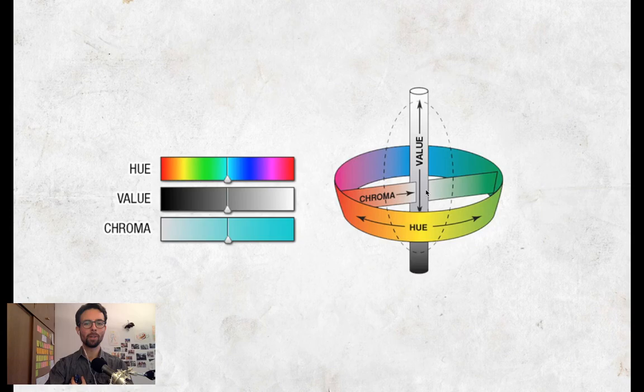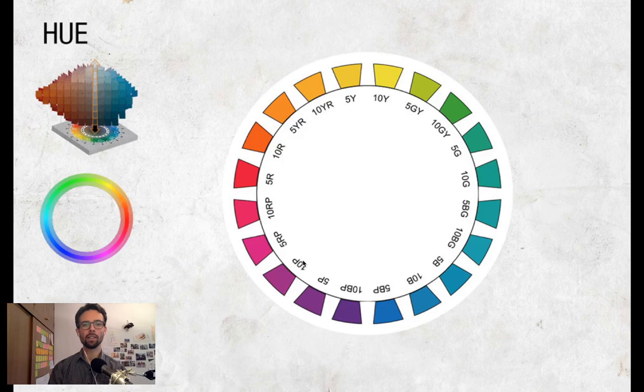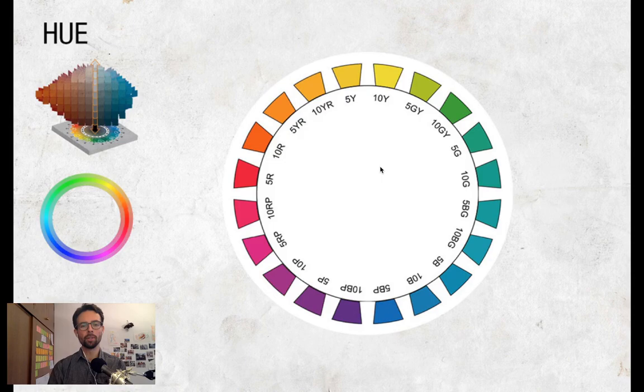So chroma — my shirt is very low chroma, close to the center of this 3D space. Let's take a look at each one again. The hue wheel in the Munsell system is great because it's very specific and uses numbers, so you can actually find any color in color space and identify any color with a specific code. People who know the system can talk about colors and know exactly what they mean.